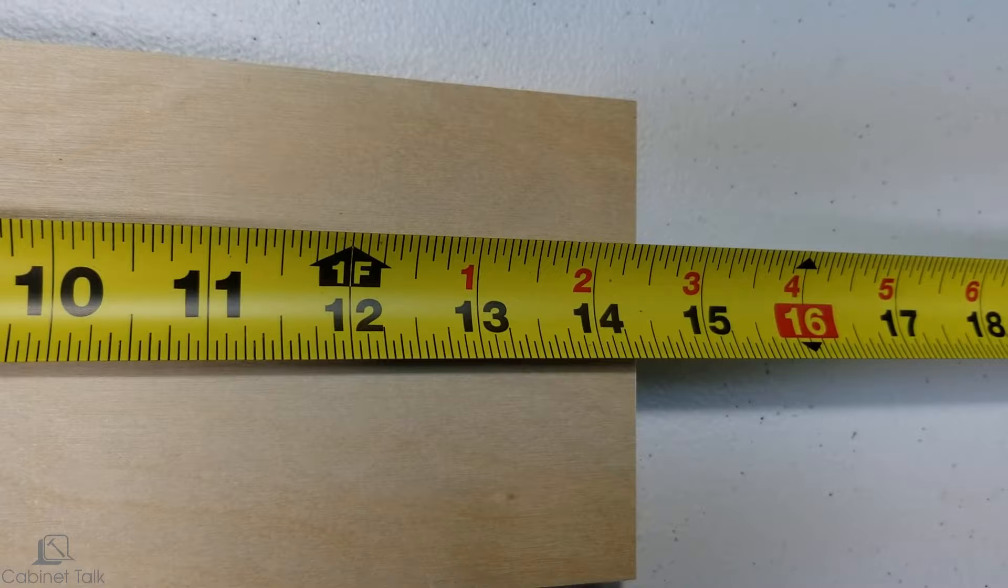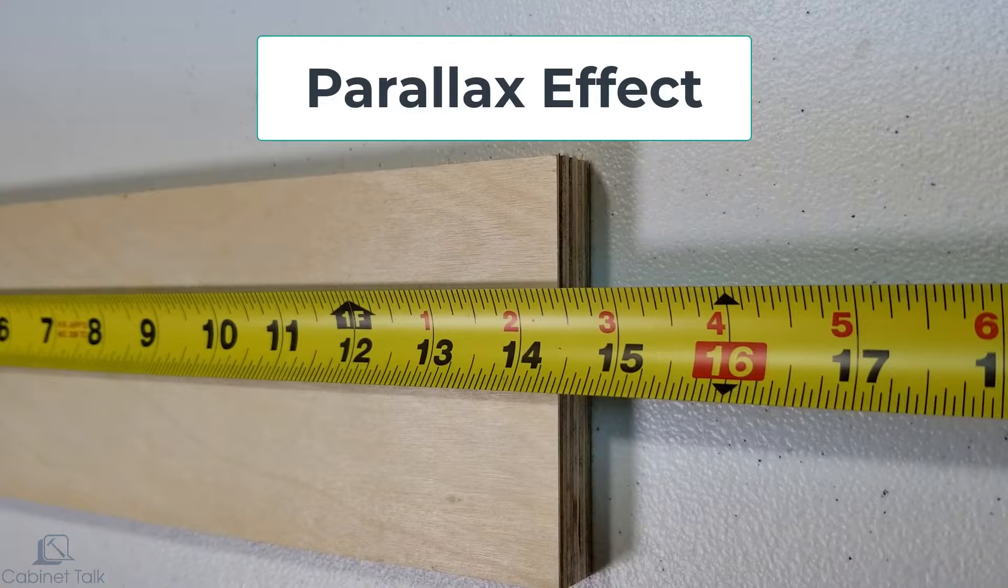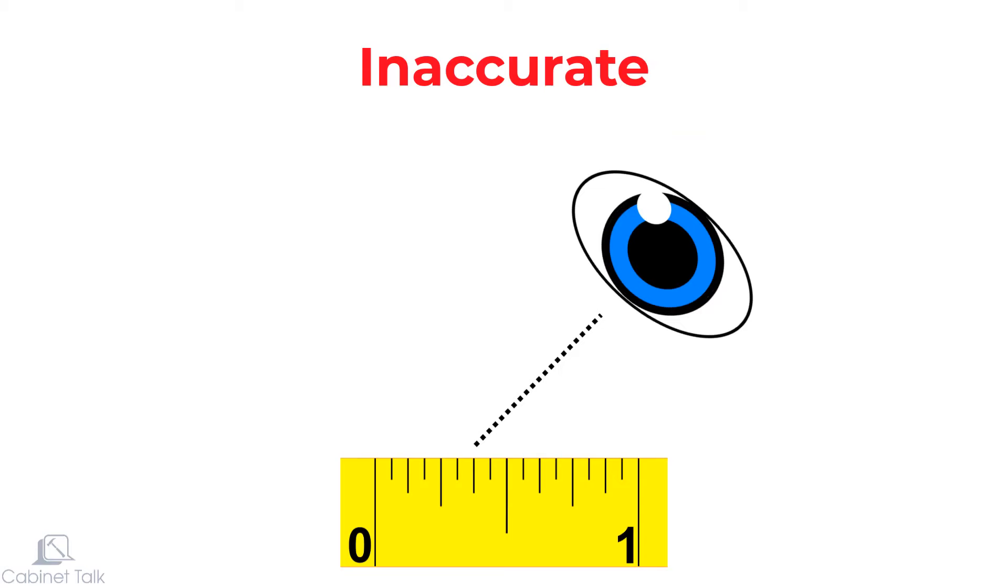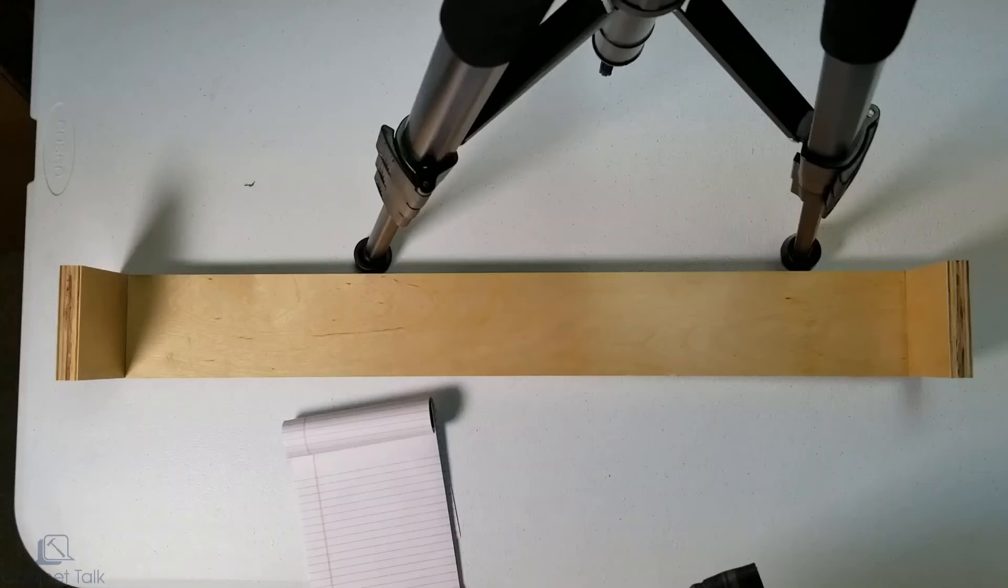When taking a measurement, the mark lining up with the edge will change as you tilt your head. This is known as the parallax effect. If you try to read the tape from an angle, you'll get an inaccurate measurement. Always read the tape with your eye directly over the mark.